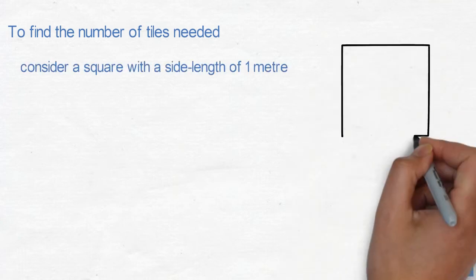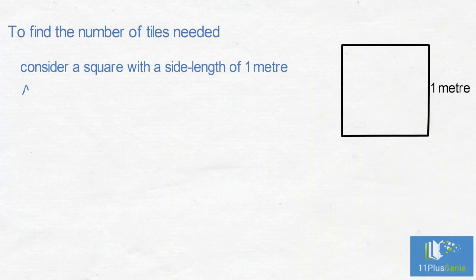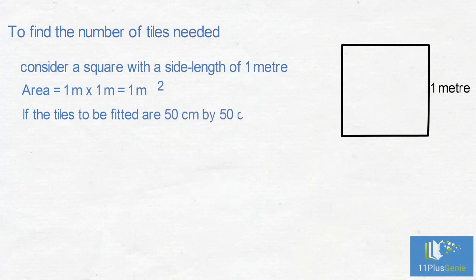To find the number of tiles needed to cover a certain area, consider a square with side length 1m. So the area of this square is 1m x 1m, which is 1m². Say the tiles to be fitted are 50cm x 50cm.